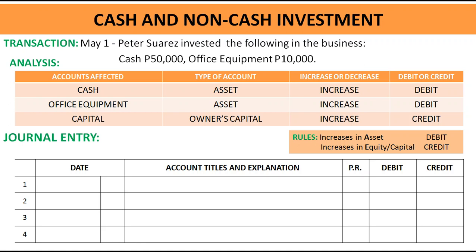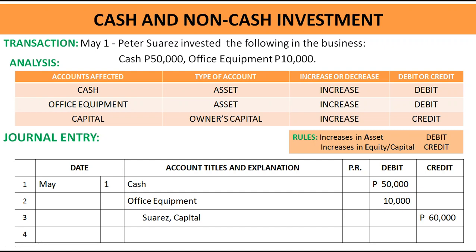Our journal entry on May 1: debit cash P50,000, debit office equipment P10,000, credit Suarez Capital P60,000 — total of cash and equipment invested. Check if they are equal: total debits 60,000, total credits 60,000 — equal.